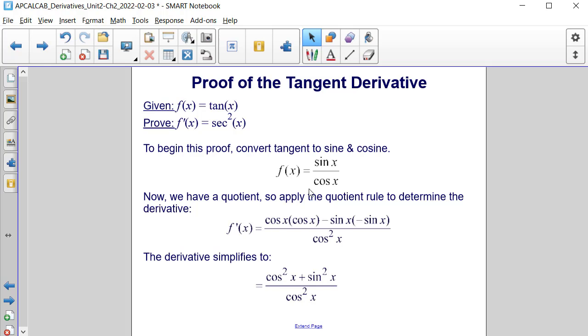So f prime of x is going to be the bottom, cosine of x, times the derivative of the top, which is the derivative of sine is cosine, minus the top, sine of x, times the derivative of the bottom, derivative of cosine is negative sine, all over the bottom squared.